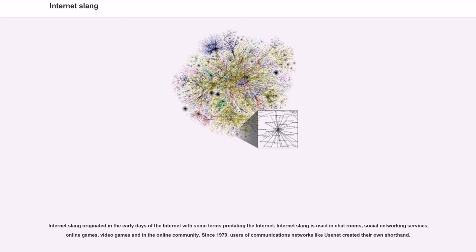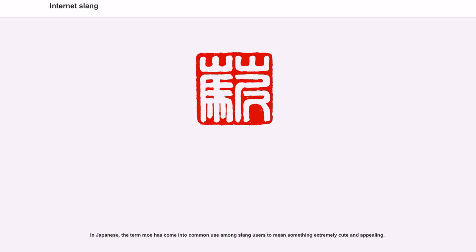Internet Slang originated in the early days of the Internet, with some terms predating the Internet. It is used in chat rooms, social networking services, online games, video games, and in the online community. Since 1979, users of communications networks like Usenet created their own shorthand. In Japanese, the term 'moe' has come into common use among slang users to mean something extremely cute and appealing.